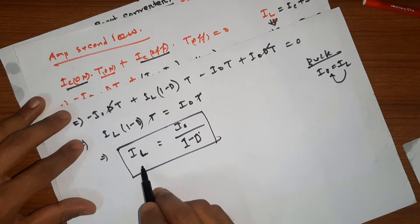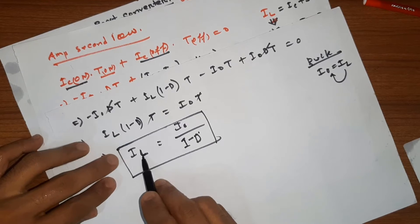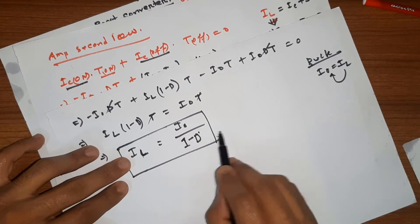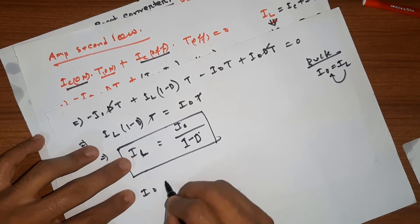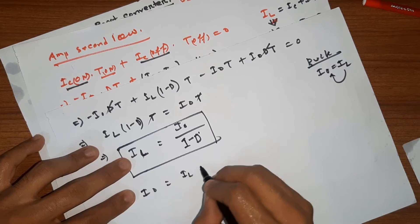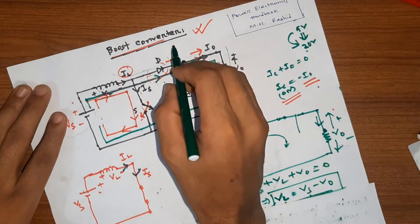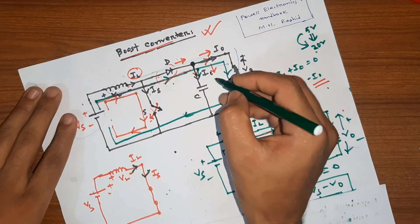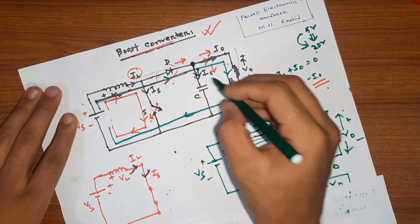We can verify: I0 equals IL times (1-D). So the output current I0 is IL times (1 minus D), confirming the relationship between inductor current and output current in the boost converter.